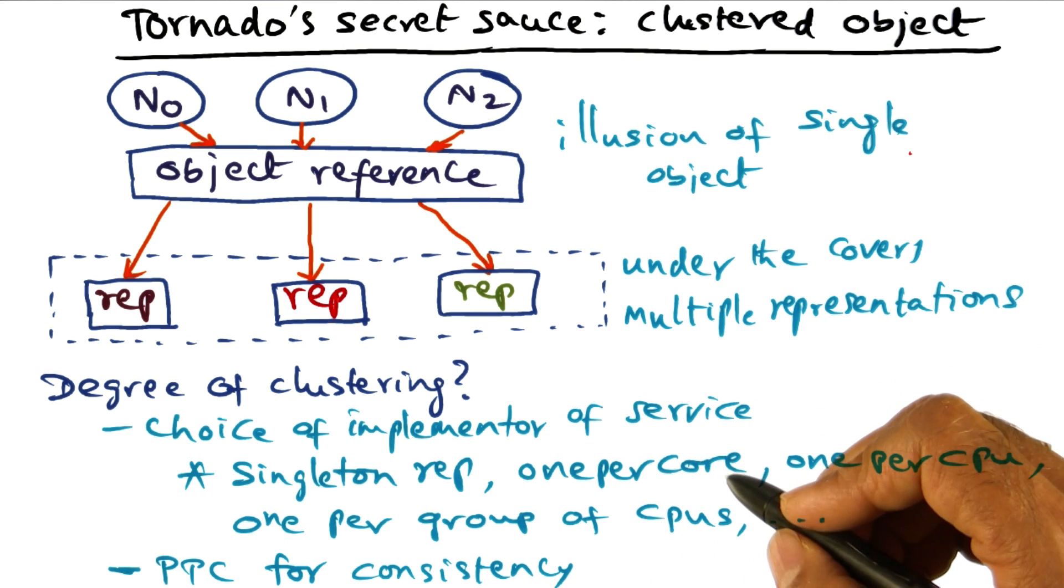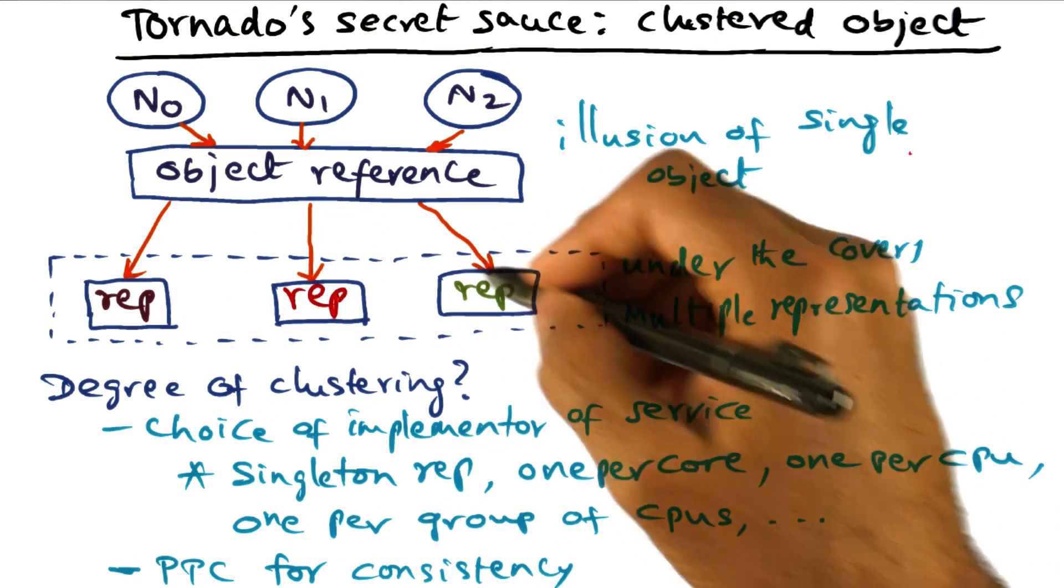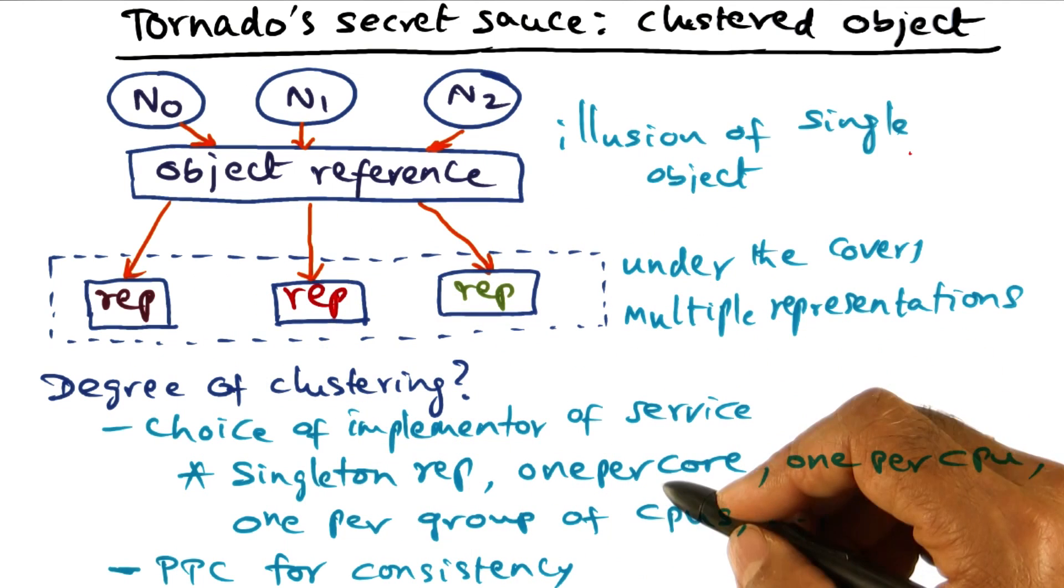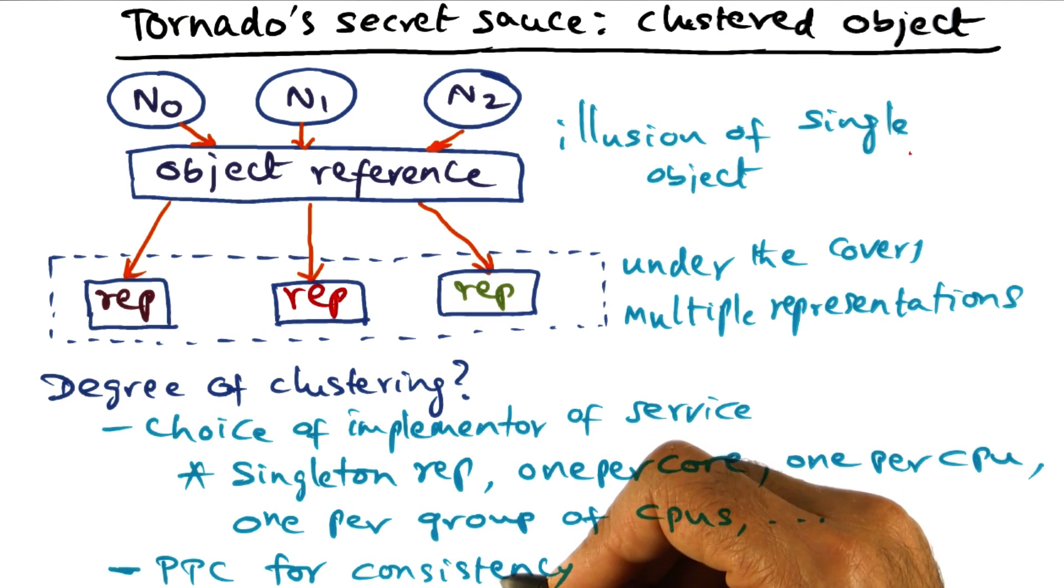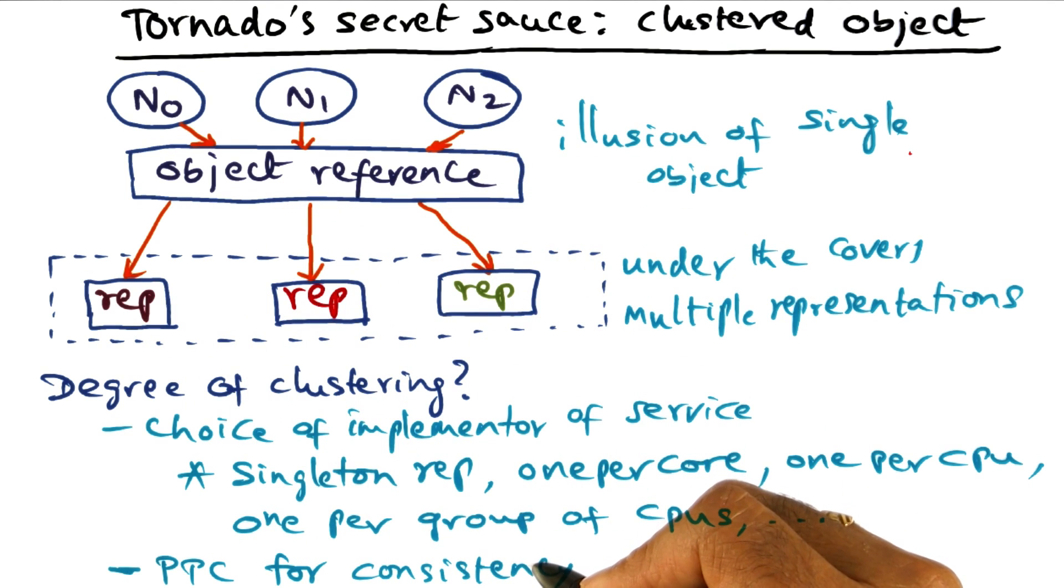So in other words, as the designer of the service, you are going to orchestrate the sharing of the data structures that are replicated, and you orchestrate maintenance of the consistency of the shared data structures through protected procedure call that you execute across these replicas. And don't use the hardware coherence mechanism in order to maintain the consistency.